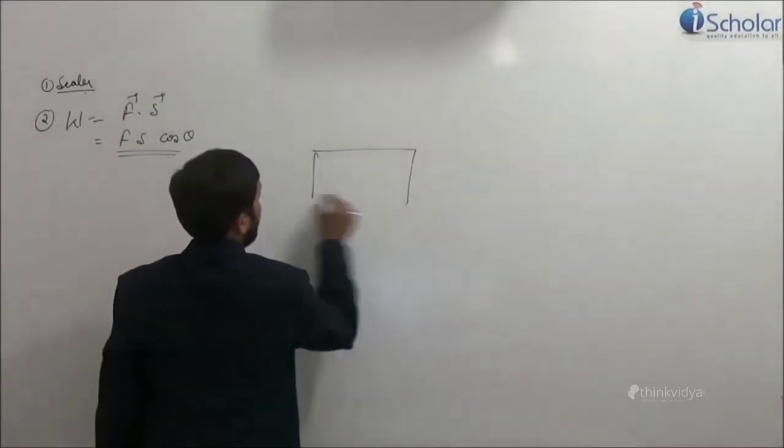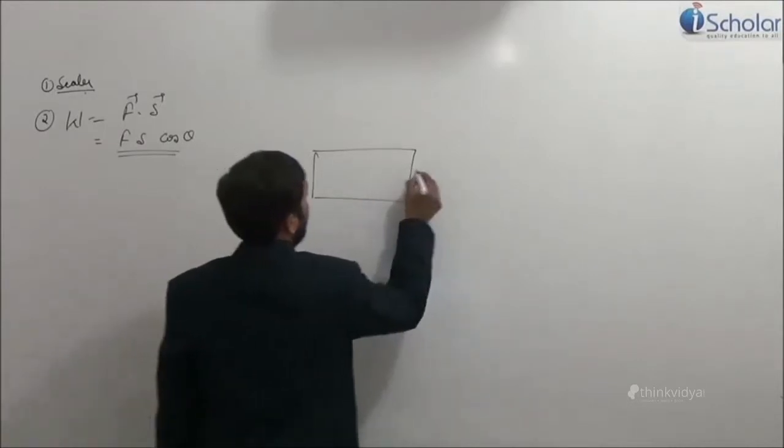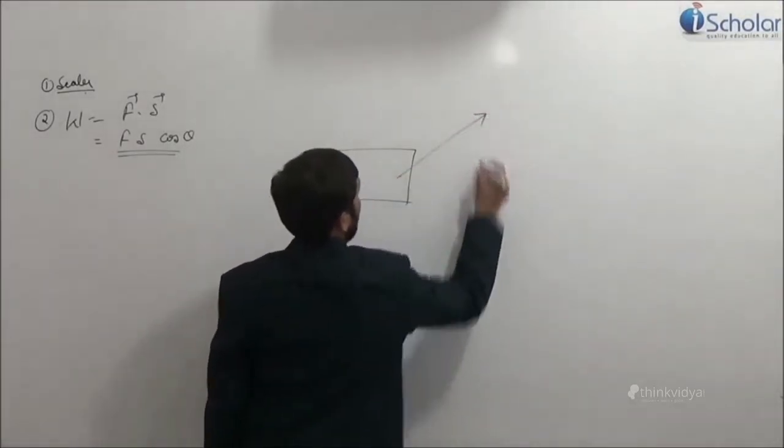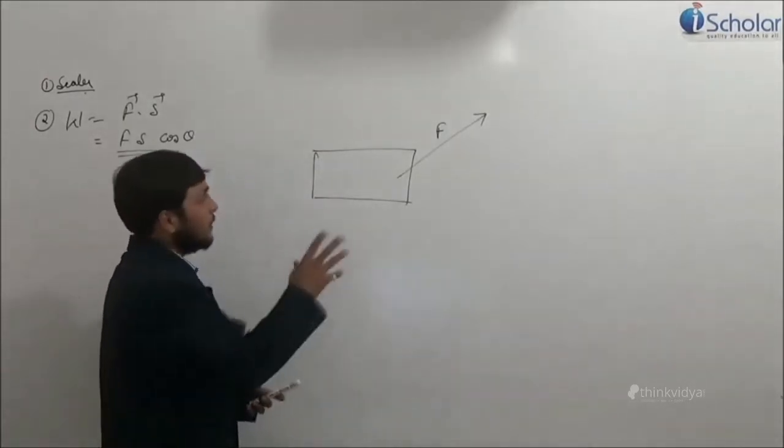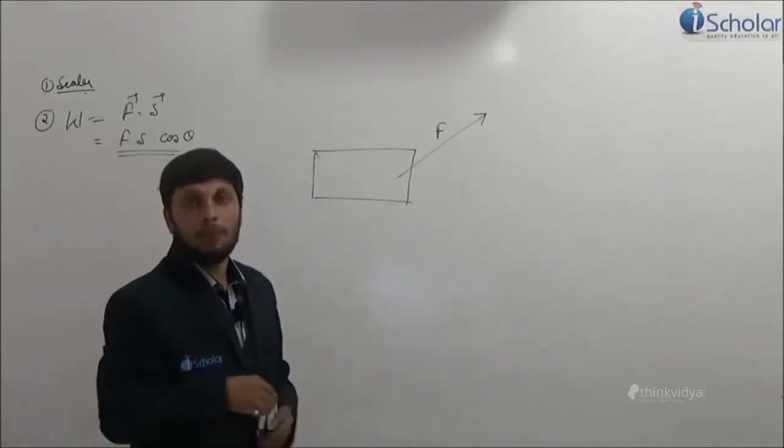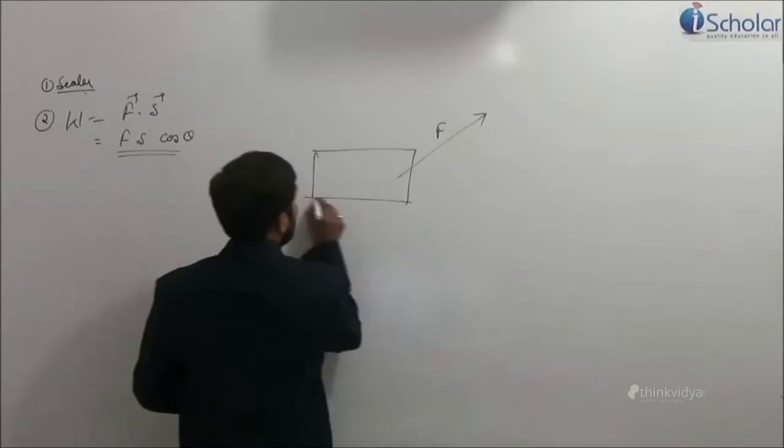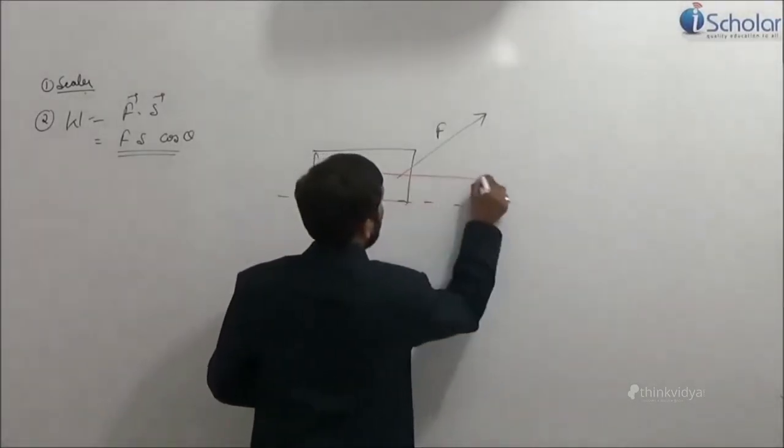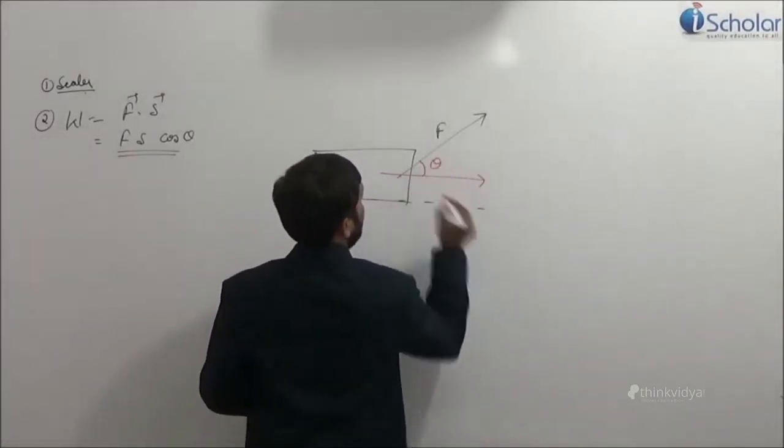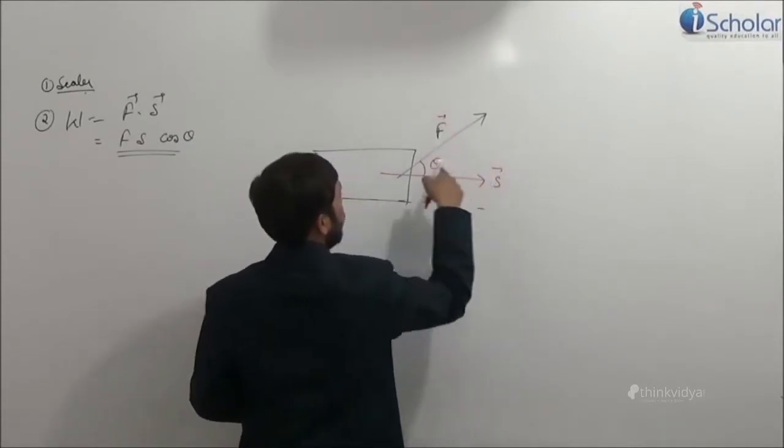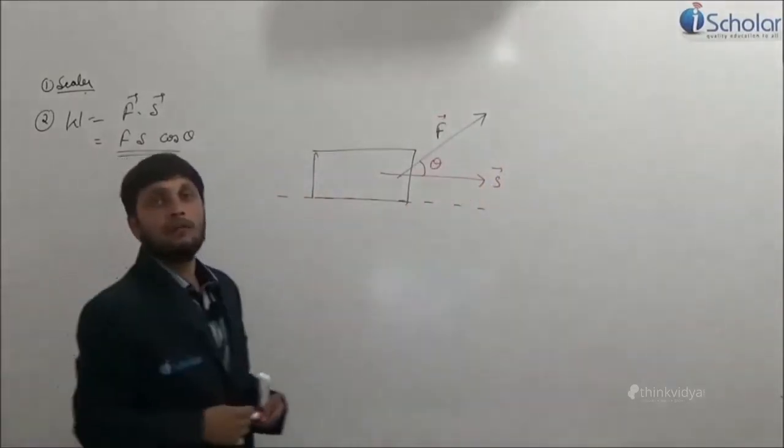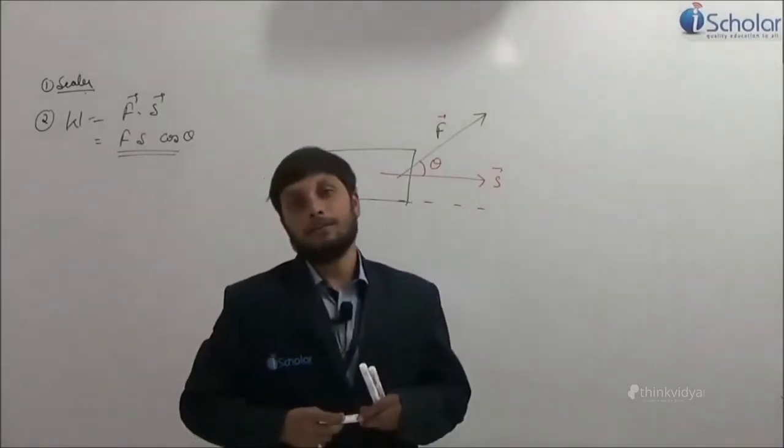In order to make you comfortable with this, suppose this is a block on which you are pulling this block like this. So force is applied in this direction. The block may or may not be lifted, but suppose in general, if the block moves like this, then this is the angle theta, this is the S. The dot product of these two vectors will give you the work done.